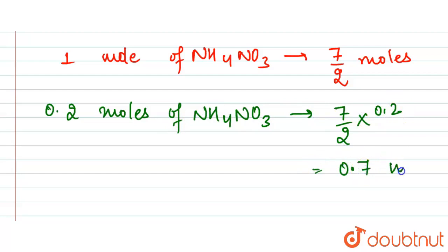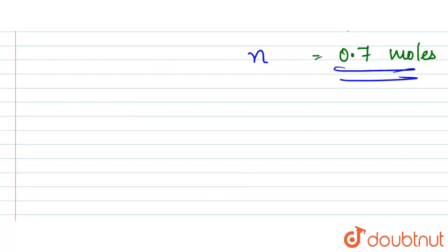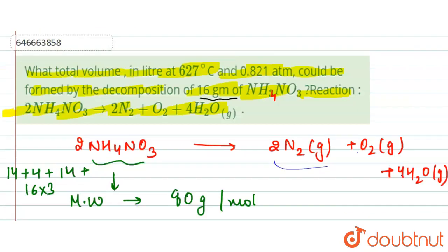So now we have got the number of moles, that is n value. We need to find out the volume using PV equals nRT. Pressure is given to us, that is 0.821. Temperature is given 627 degree Celsius, which will be equal to 627 plus 273, that is equal to 900 Kelvin.